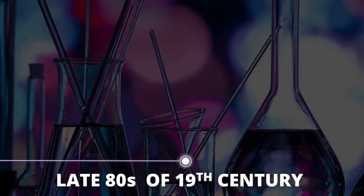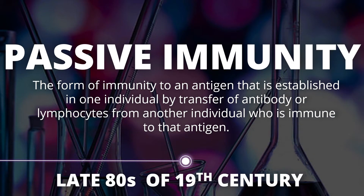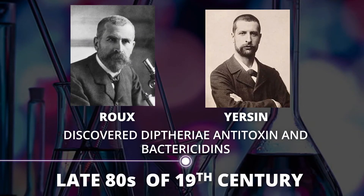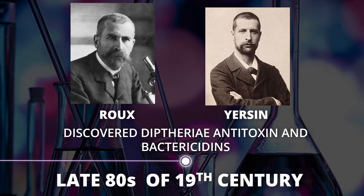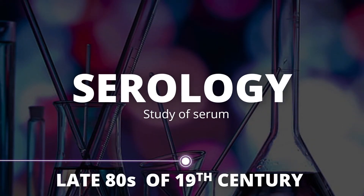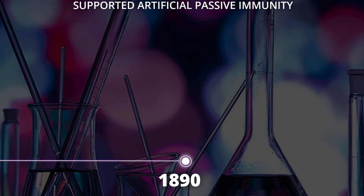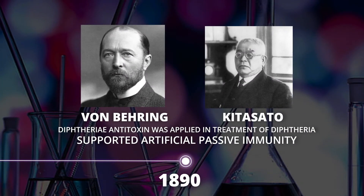In the late 1880s of the 19th century, two scientists advocated passive immunity — the form of immunity to an antigen established in one individual by transfer of antibody or lymphocytes from another individual who is immune to that antigen. Roux and Yersin discovered that diphtheria was caused by an exotoxin produced by Corynebacterium diphtheriae, and they discovered diphtheria antitoxins and bactericidins. It was also in the late 1880s when serology, the study of serum, began. Von Behring and Kitasato in 1890 further supported the concept of artificial passive immunity, applying diphtheria antitoxin in the treatment of diphtheria.